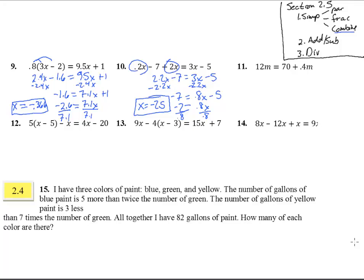Number 11. We don't have any parentheses. We don't have any fractions. But we do need to combine these. So let's subtract .4m. Subtract .4m. And we get 70 equals 11.6m. We don't have anything to add or subtract. So we just divide by 11.6. And we get m equals 6.03.